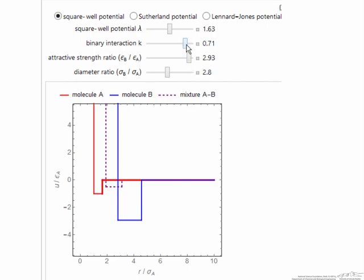And if I go in the other direction to make it negative, now the well is deeper—molecule A prefers to be near molecule B rather than near another molecule A. So this gives you some idea of the interaction parameter behavior. Sutherland potential shows the same kind of behavior, or more realistic—well certainly more realistic—Lennard-Jones potentials.